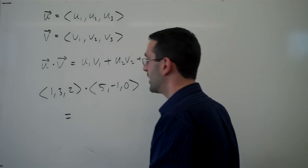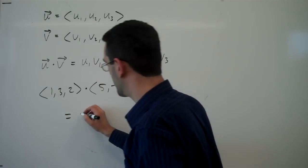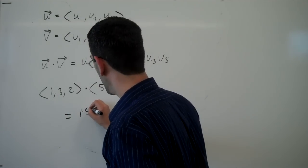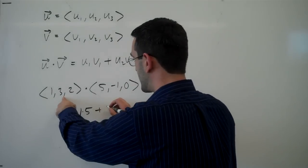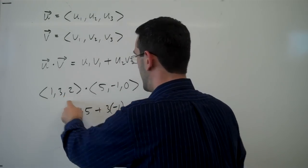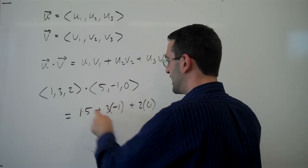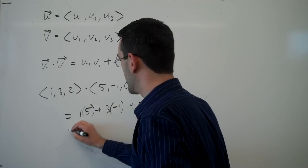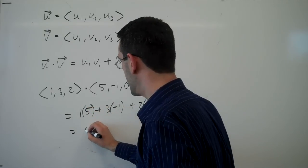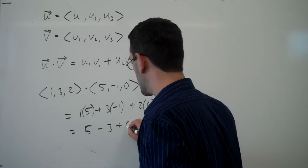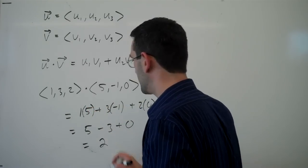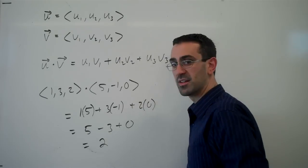the dot product of those, I would multiply the first components, so 1 times 5. I'd multiply the second components, and I'd multiply the third components, and I would add those up. So I have 5 minus 3 plus 0 is 2, and that's the dot product of these vectors.